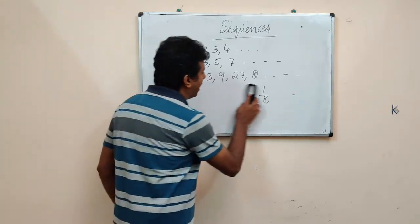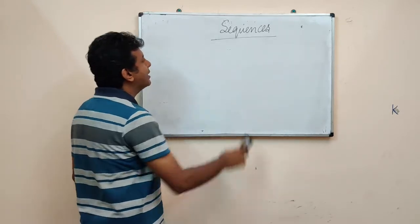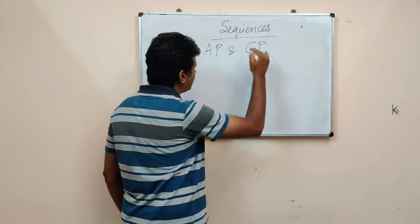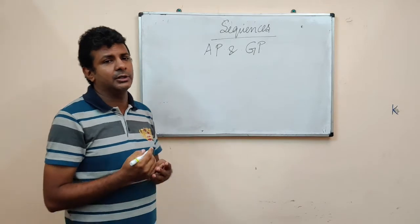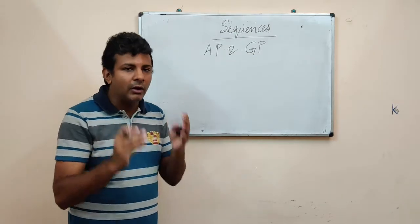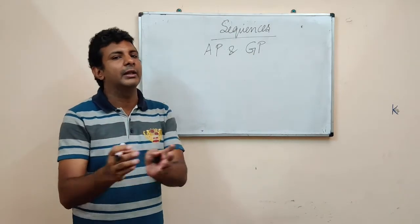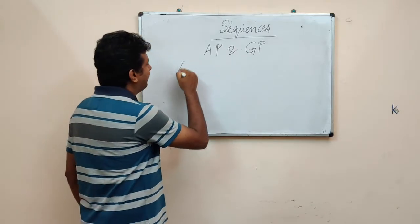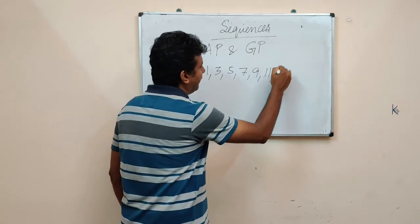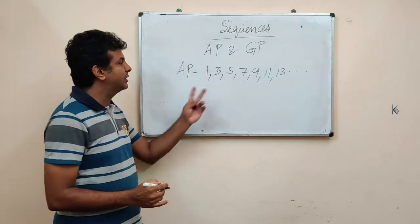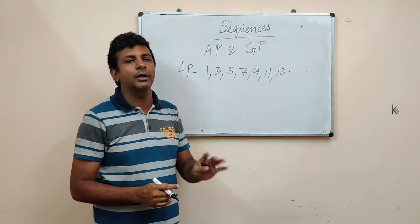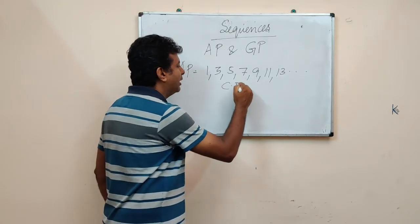Now the most common sequences are arithmetic progression and geometric progression. An arithmetic progression is a sequence in which a particular number is always added to the previous number to get the next number. For example, an AP will be 1, 3, 5, 7, 9, 11, 13, etc. The difference between any two numbers is the same and that is what is called the common difference.